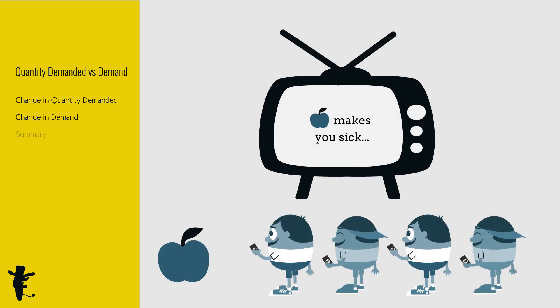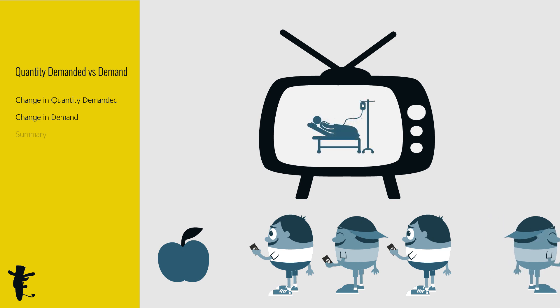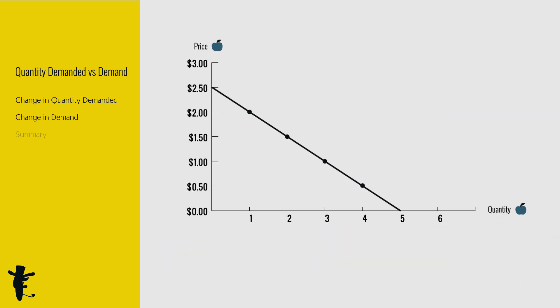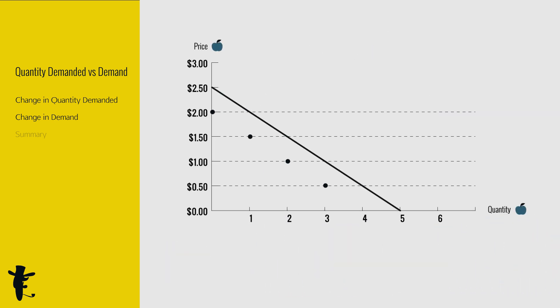What if we see this instead on TV? Apples cause diseases? Buy fewer apples. At every price, people will be buying fewer apples. So when people no longer like apples, demand decreases. Hence, the demand curve shifts to the left.